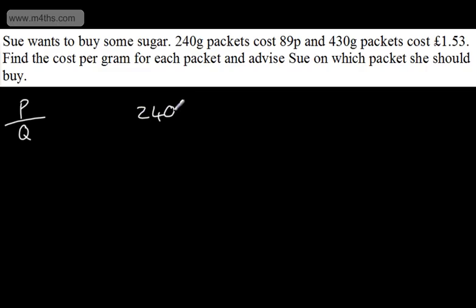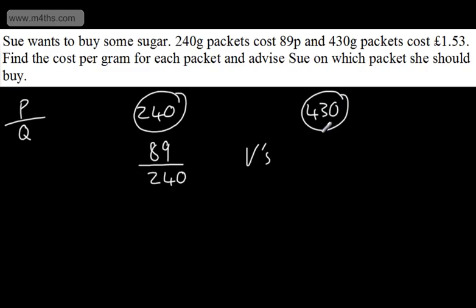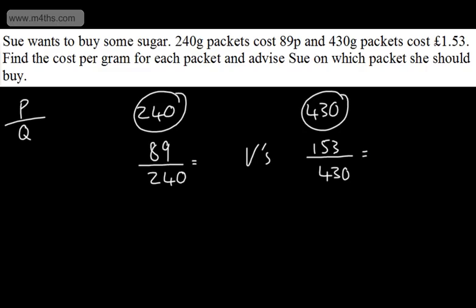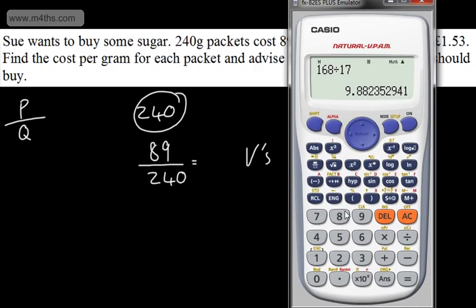So let's now look at the 240 gram packet. We'll have the price. If we just look here we've got 89p and 153. So I'm going to put this in pence. So 89 divided by 240. And then I'm going to have versus now the 430 gram packet. The price is 153p and the quantity now is 430. So if I calculate these now we're going to have the cost per gram. So let's go ahead and do that. And remember these values might be quite close. So we need to keep a decent level of accuracy.